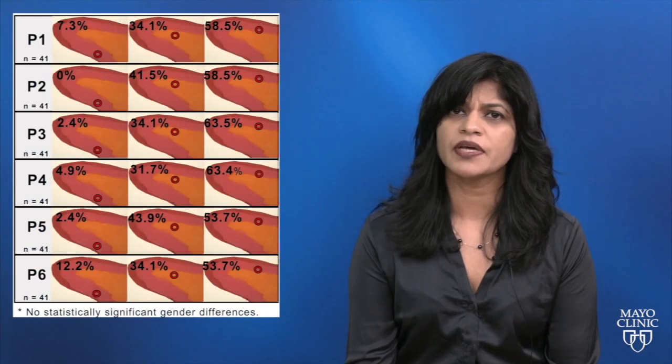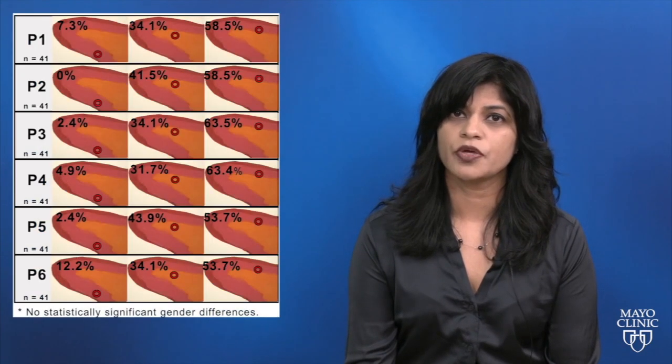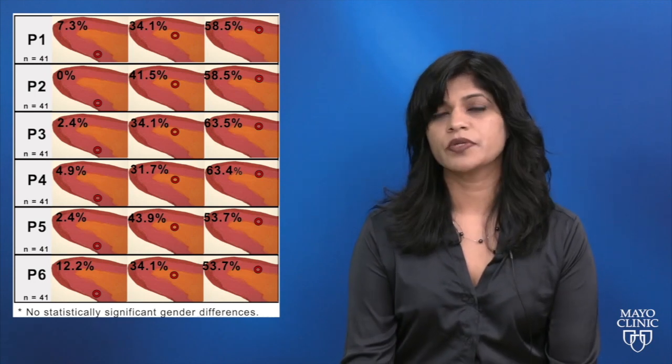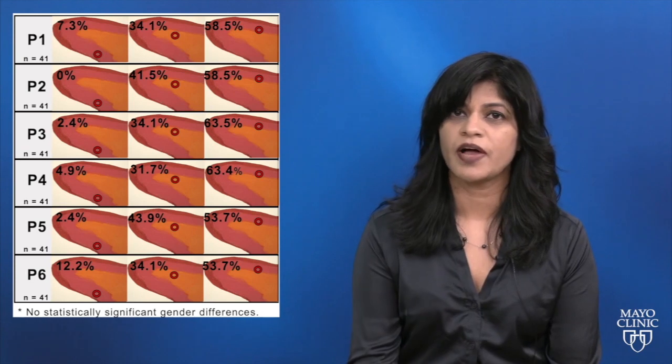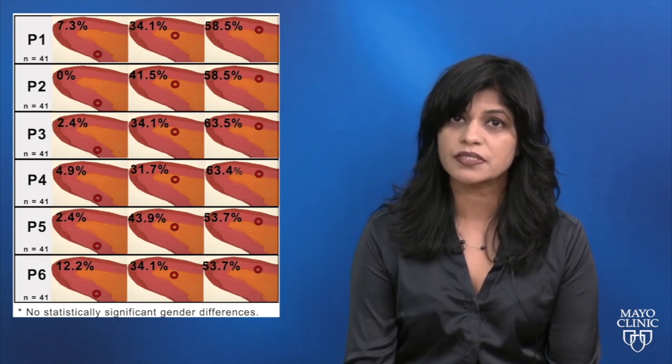It is well known that the artery can have one of three positions. Either it would be between the orbicularis oris muscle and the oral mucosa, or it could take an intramuscular route and go through the fibers of the orbicularis oris muscle.